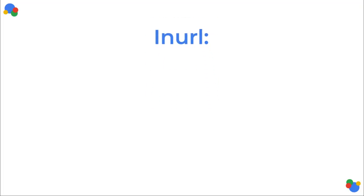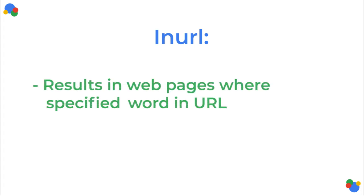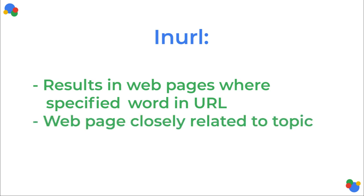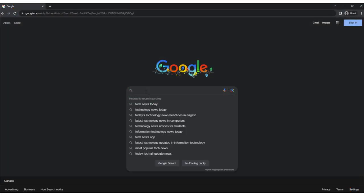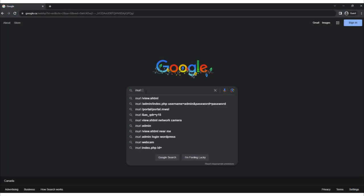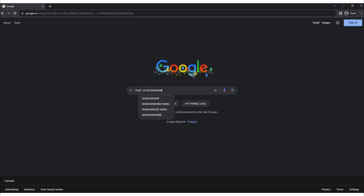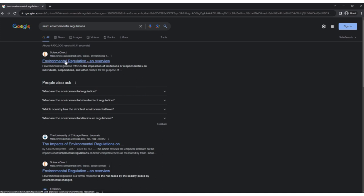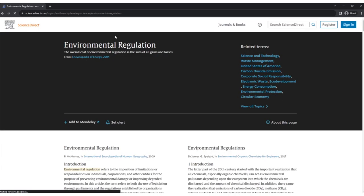The inurl: operator is used to specify that search results should include web pages where the specified keywords or phrases appear in the URL. This is useful when you want to find pages where the keyword is part of the web address, indicating the page is likely closely related to that topic. For example, if you're looking for government websites discussing environmental regulations, you can use 'inurl:environmental-regulation' to find pages with that term in their URLs, helping identify official government documents or resources.